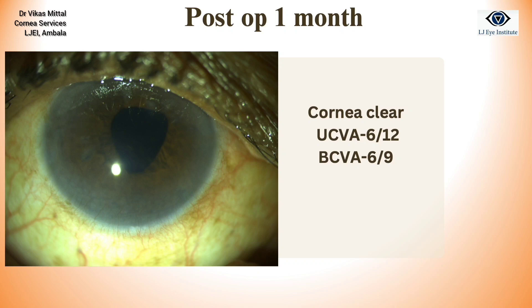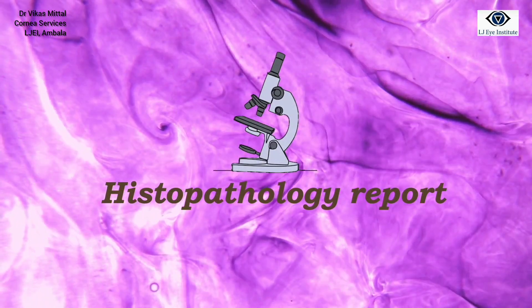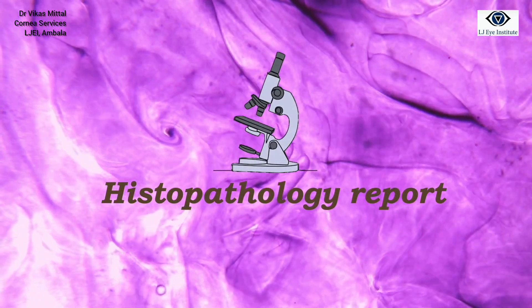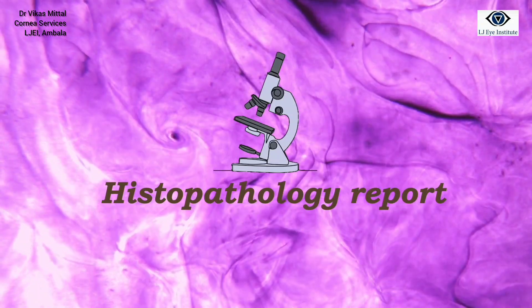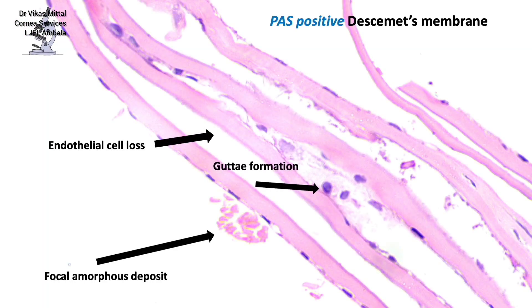On tracing the histopathology report, we found presence of PAS-positive Descemet's membrane with guttae formation and few endothelial cells with focal amorphous deposits.